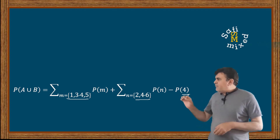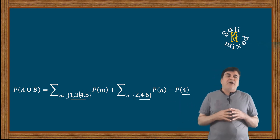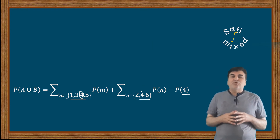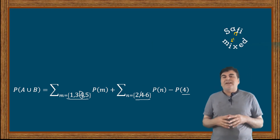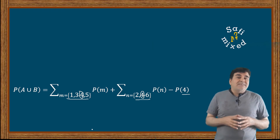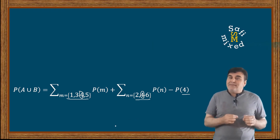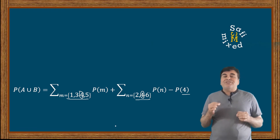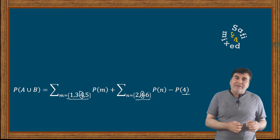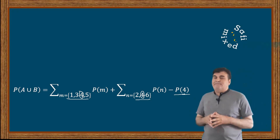If you carefully look at this equation, the probability of 4 is counted in both the first and second terms. In order to cancel the double counting of the shared element, the probability of the shared element is therefore subtracted at the end of this equation.